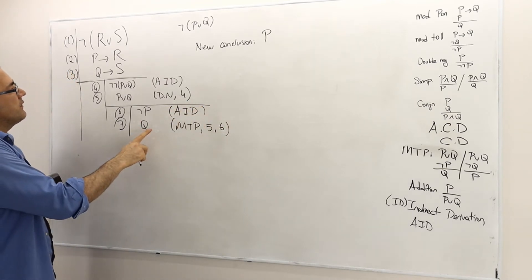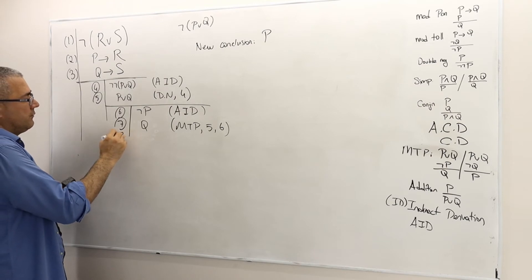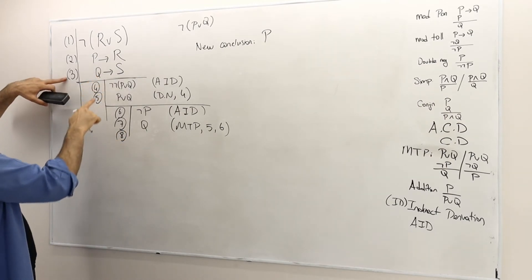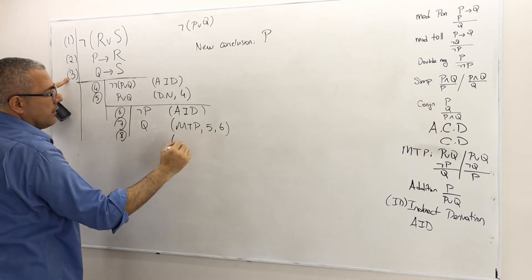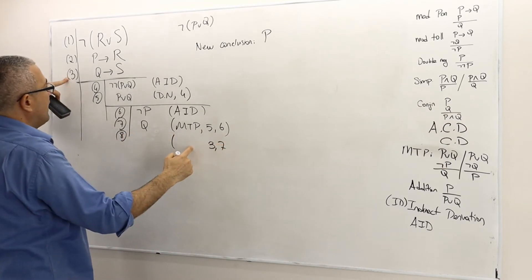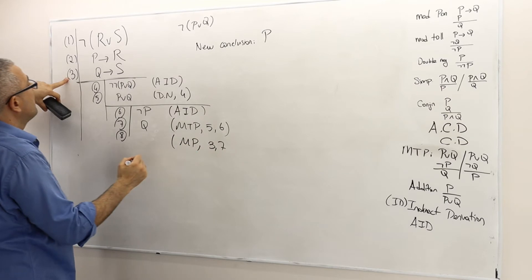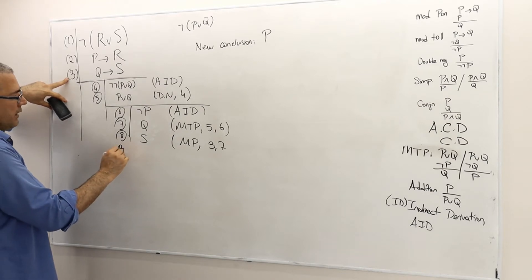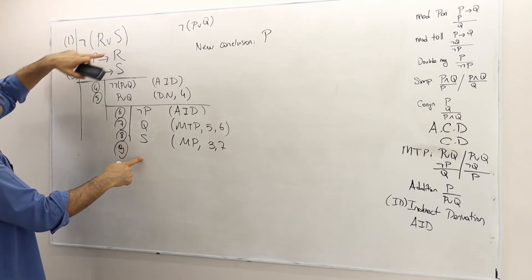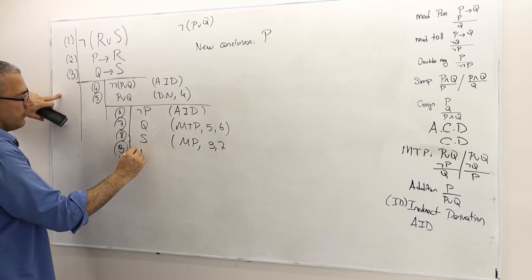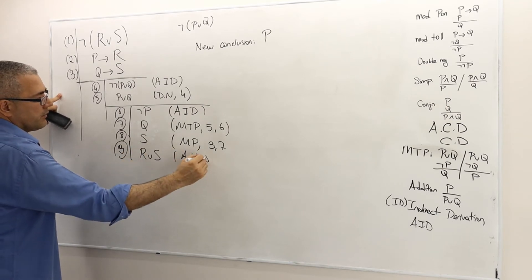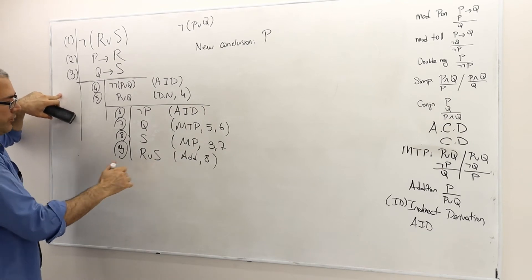Once I have Q, I can use lines three and seven with modus ponens, so S must be true. Then in line nine, I add R to that statement — this is addition to the statement in line eight — so R or S must be true.